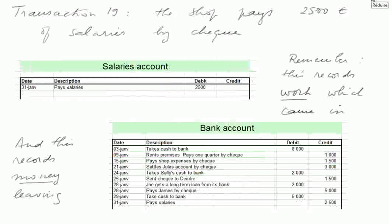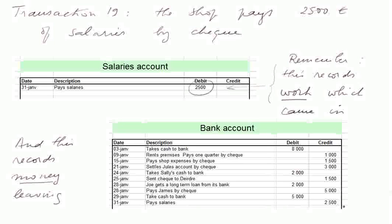Transaction 19 — the last transaction in this representative accounting cycle. The shop pays 2,500 euros of salaries by cheque. A salaries account is debited 2,500 euros, recording the work that came in. The bank account is credited 2,500 euros, recording the money that leaves. In other words, the salaries account records work, while the payment account records the money used to pay, even though the figures are the same.